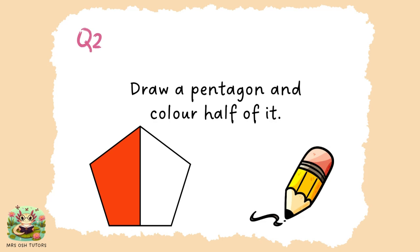Here is my pentagon — my five-sided shape — and I have coloured in half of it. You might have coloured in half a different way, but it would always begin from one of the corners across directly to the opposing side. You could rotate the pentagon and find different halves, but they will all be exactly half coloured in and half not. See if you think you've managed to do that.